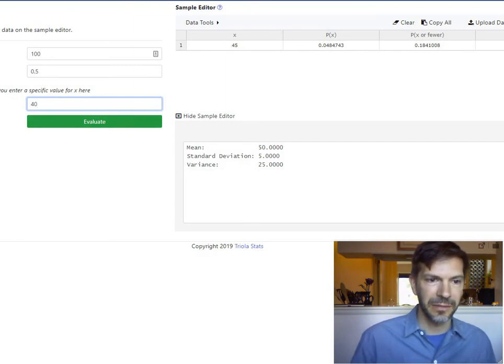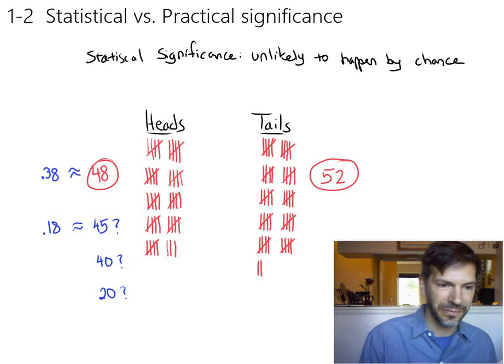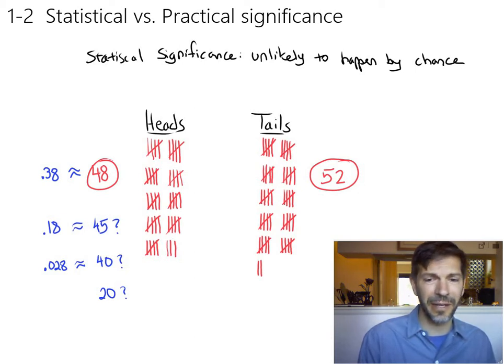Let's look at 40 and let's see what the chances are there. 40. Now we're down to about a 3% chance, a 2.8% chance. So with a fair coin only a little bit less than 3% of the time would you get 40 heads or less.